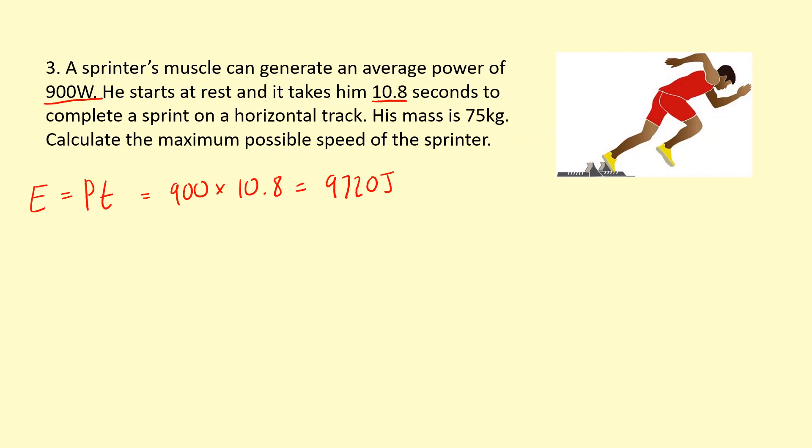Calculate the maximum possible speed of the sprinter. He's on a horizontal track, so we can ignore any gravitational potential energy. We're trying to find the maximum possible speed, so we're ignoring any energy dissipated due to work done against air resistance. We're going to make this equal to the kinetic energy of the person, half mv squared. We know the mass is 75, so I'm just going to rearrange this.